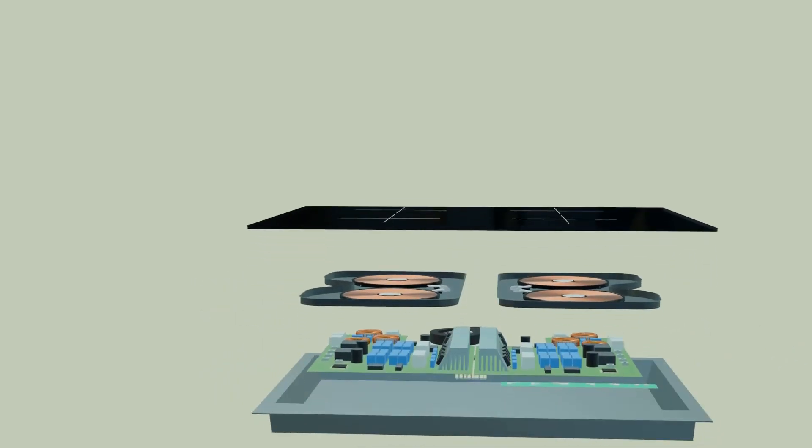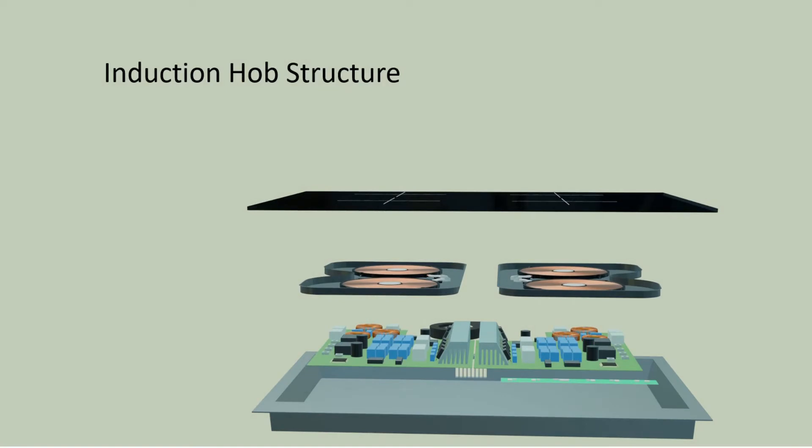Here is the typical structure of an induction hob. At the bottom is the tray holding all the parts. Closer to the tray are the electronic circuits. The small circuit to the front is for the induction hob controls.